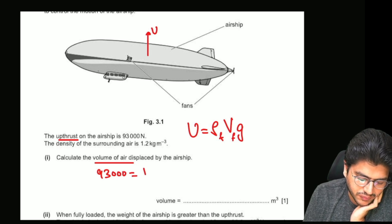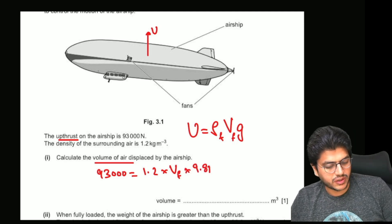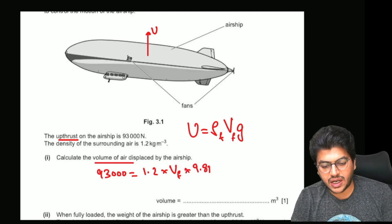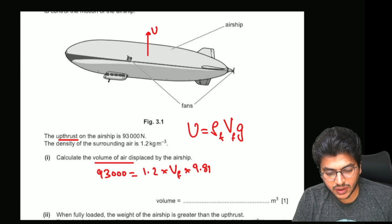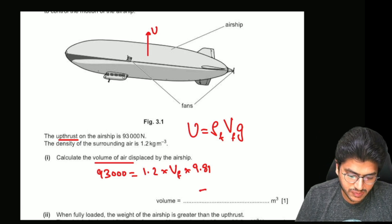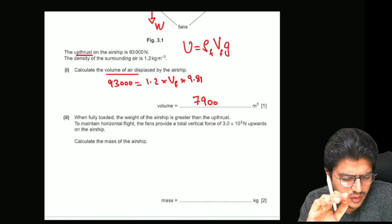The upthrust equals the density of the fluid, which is 1.2, multiplied by the volume of the fluid, multiplied by gravity, which is 9.81. So when you divide 93,000 by 1.2 and then by 9.81, you end up getting the volume of the fluid displaced as 7,900 cubic meters. That's part 2.